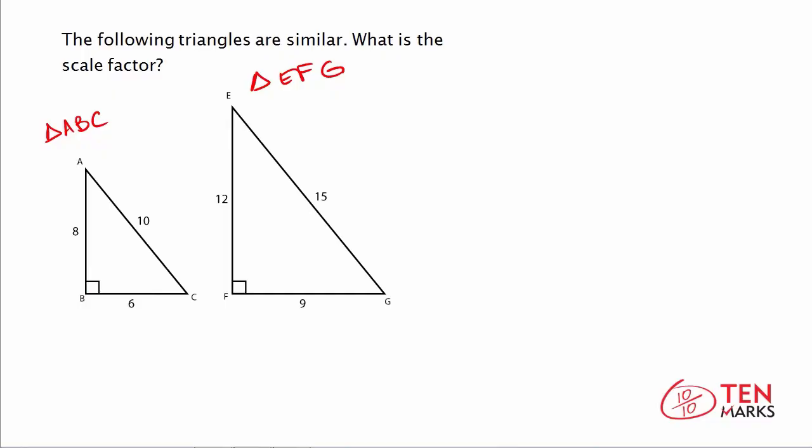And if you want to find the scale factor, what you need to do is find the ratio of these two corresponding sides. So look at the side length. AB has a side length of 8. EF has a side length of 12. So find the ratio by using division. When you simplify this by dividing both numbers by 4, you get 2 thirds.